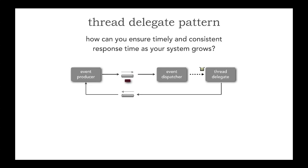For example, let's say that we have some sort of business transaction — an order or a trade. The event dispatcher picks it up, and its only responsibility is to delegate it to a particular thread. That thread delegate processes that message, and if a response is needed back to that event producer — a confirmation number or an order number — it's up to that thread delegate to send that through another event channel. This allows systems the ability to grow as our business grows.